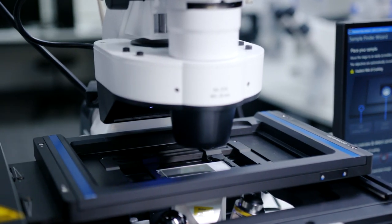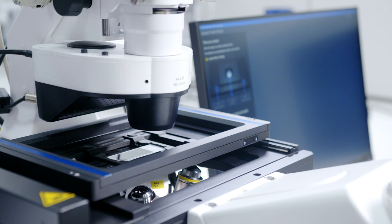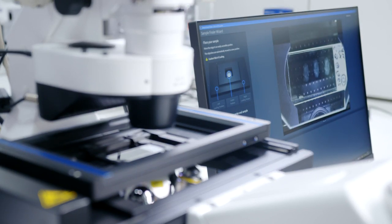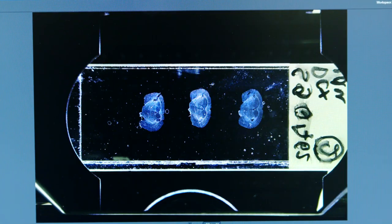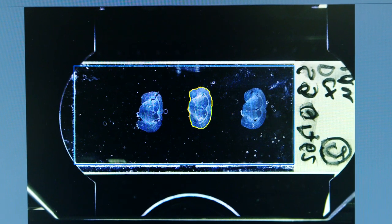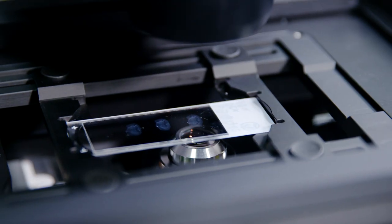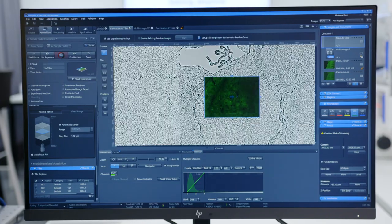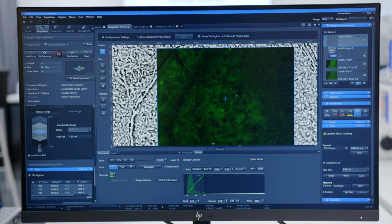Locating your sample is as easy as placing it under the microscope and letting the software do the work. AI Sample Finder detects the sample carrier and identifies the sample areas. Every area is focused automatically and you can start your experiment right away.